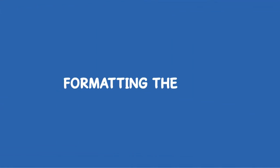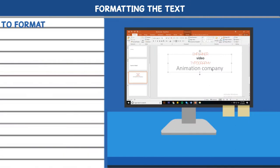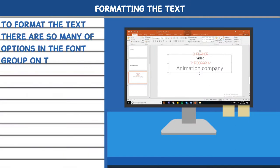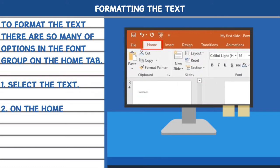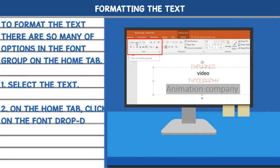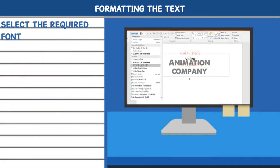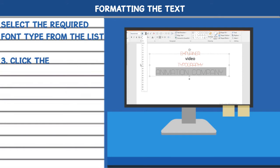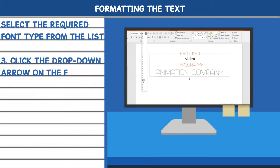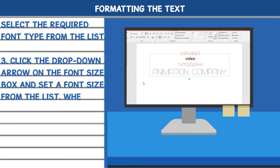Formatting the text. To format the text, there are many options in the font group on the home tab. 1. Select the text. 2. On the home tab, click on the font drop-down list arrow in the font group. Select the required font type from the list. 3. Click the drop-down arrow on the font size box and set a font size from the list.